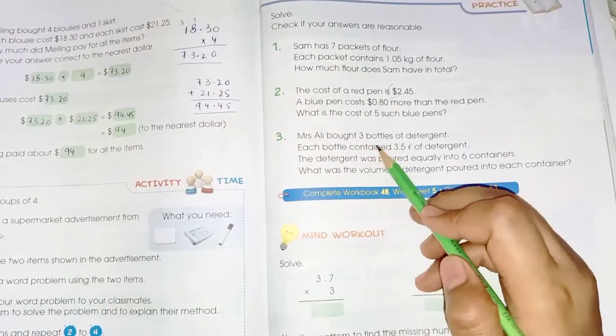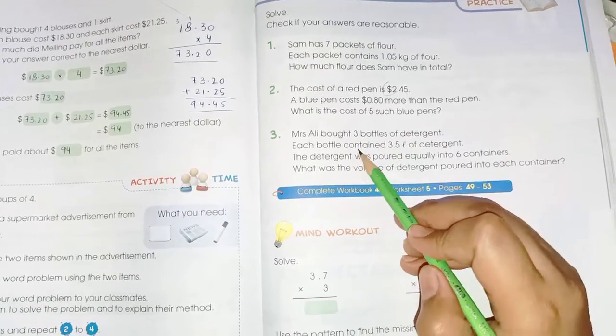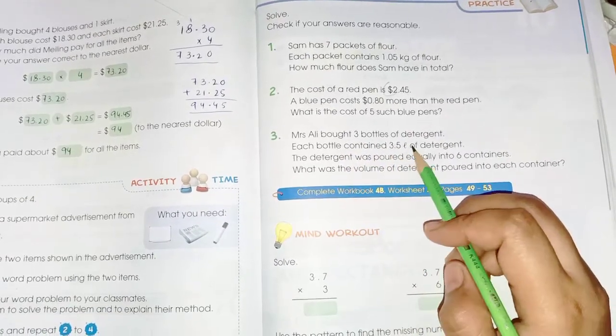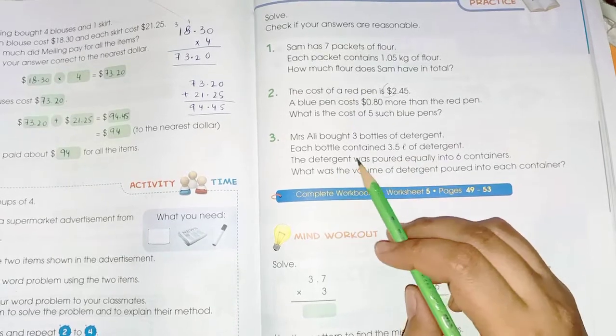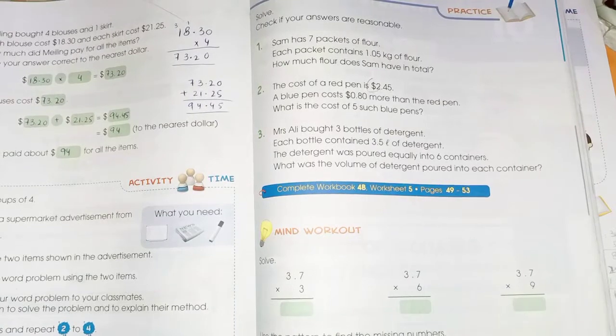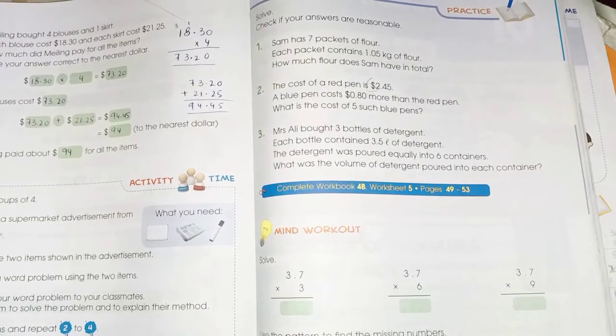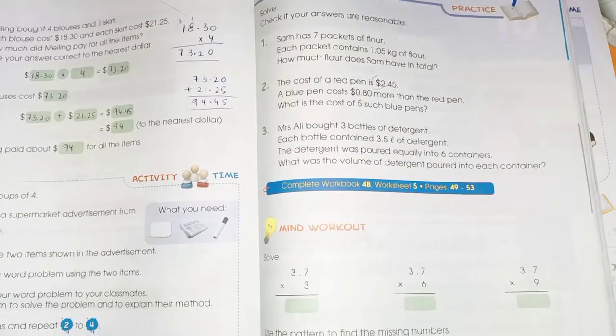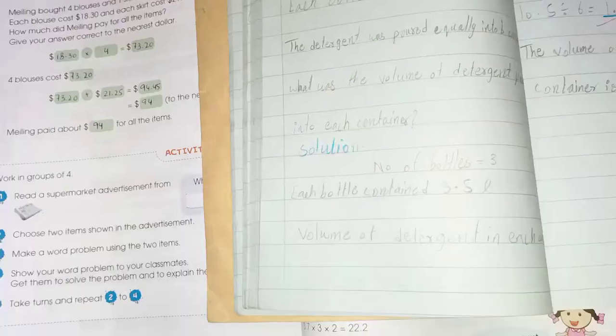Word problem number 3: Mrs. Ali bought three bottles of detergent. Each bottle contains 3.5 liters of detergent. The detergent was poured equally into six containers. What was the volume of detergent poured into each container?